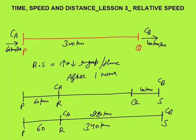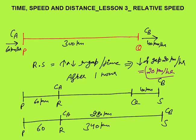So it means the distance will reduce by 20 km per hour. Earlier the gap was 300 km; now after 1 hour the gap between the two cars is 280 km. There is a decrease of gap of 20 km per hour, and this is my relative speed. So relative speed in this case is 20 km per hour. That was the concept of increase or decrease in gap per unit time.